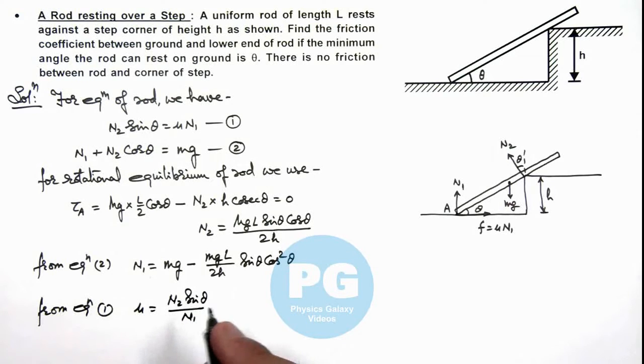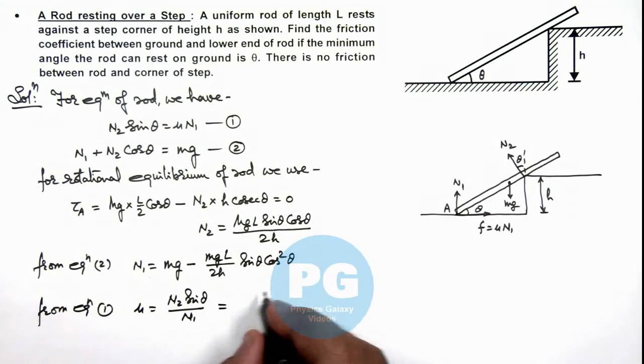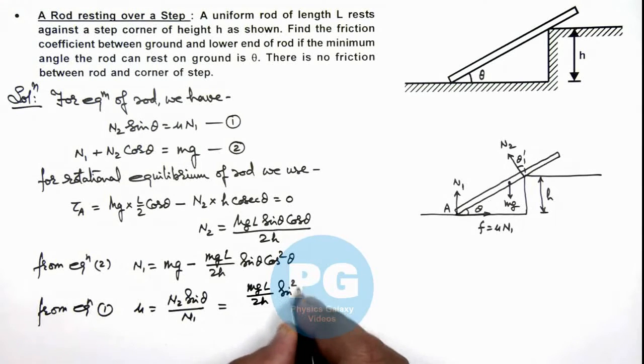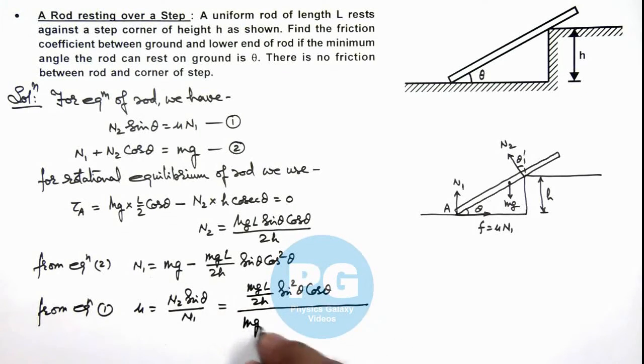So if we substitute the values of N2 and N1 over here, the result we'll be getting is N2 sine theta is mg L by 2h multiplied by sine squared theta cos theta, divided by N1 is mg minus mg L by 2h sine theta cos squared theta.